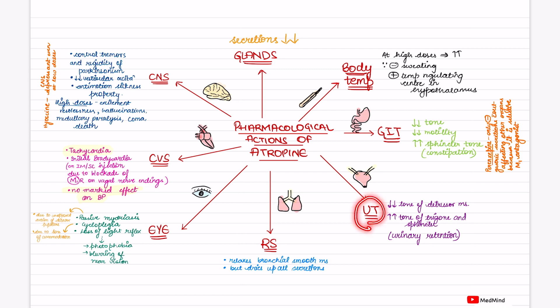What will it do in the urinary tract? It will cause urinary retention. It will reduce the tone of detrusor muscle and trigone and sphincter tone. In GIT, it will reduce the tone and motility but will increase the tone of sphincter.